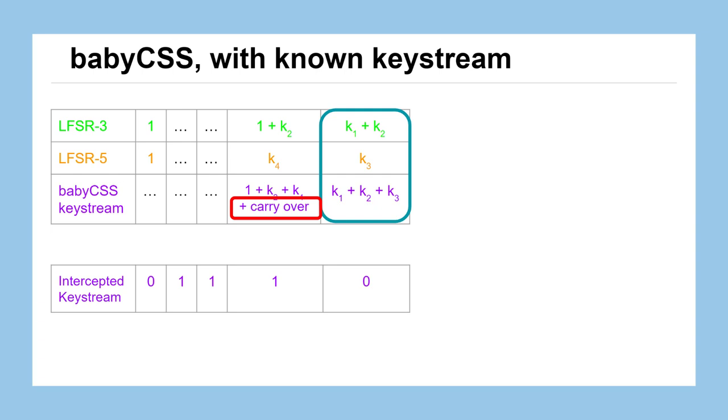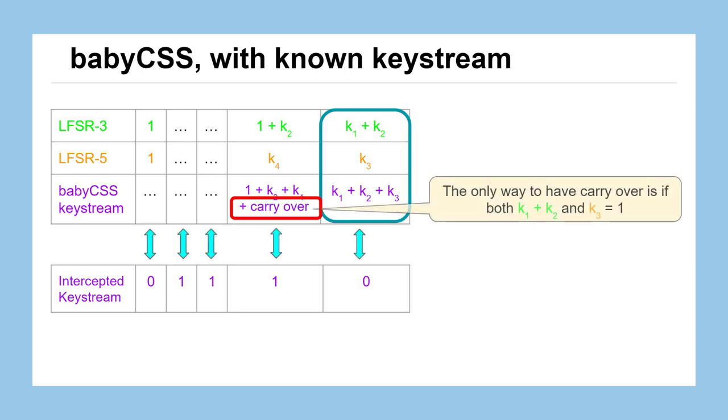But when we get to the next column of bits, the output there would be the sum of one plus K2 (that's the LFSR-3) and K4 (that's the output of LFSR-5) plus there we go, there's that red box, that carry over from anything that came from the first column that we just finished computing. Now how would we know if there was a carry over from the sum of K1 plus K2 and K3? Well, there'd only be a carry over from that column if both of those outputs, the one from the three-bit and the one from the five-bit, were equal to one.